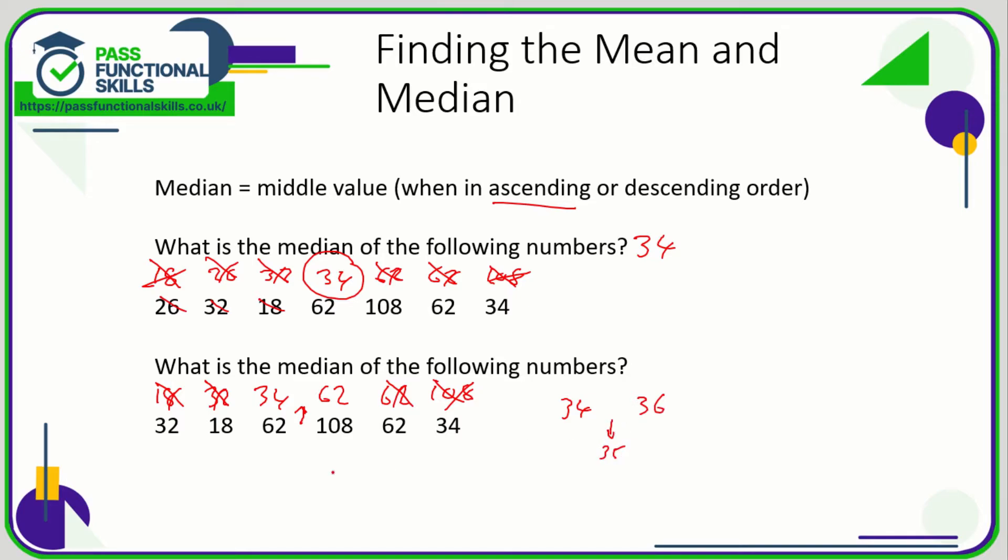What you can do is add 34 and the 62 and divide that total by 2. 34 plus 62 is 96. 96 divided by 2 is 48, so 48 is halfway between 34 and 62. So our median is therefore 48.